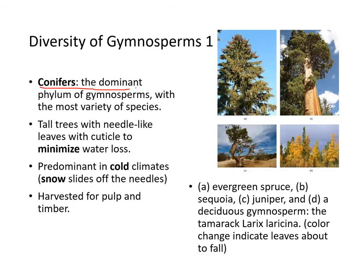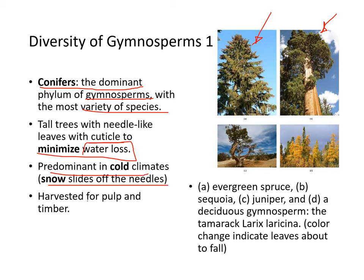Conifers are the dominant phylum of gymnosperms with the most variety of species. They are tall trees with needle-like leaves with cuticles, which minimizes water loss. Conifers are named for their cone-bearing property and are predominant in cold climates where snow just slides off the needles. They are often harvested for pulp and timber. Examples include spruce, sequoia, and juniper trees, as well as deciduous gymnosperms. Sequoias are among the biggest, tallest trees — at the Sequoia National Park there is one tree you can drive a car through.